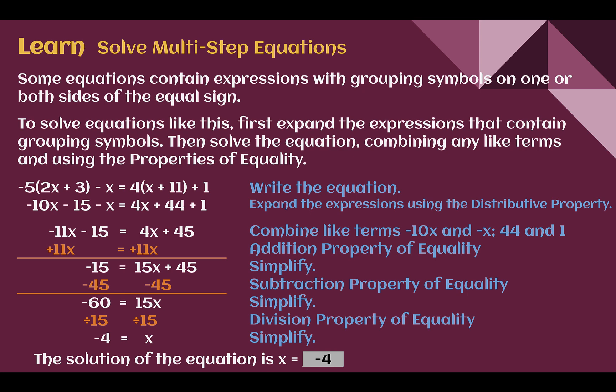Here's an example. We start off with negative 5 times the quantity 2x plus 3, then take away an x, equal to 4 times the quantity x plus 11, with another one added. To solve this, we see those grouping symbols — first we want to get rid of them. We have to use the distributive property and take what's in the group and multiply by how many times it tells us out front.